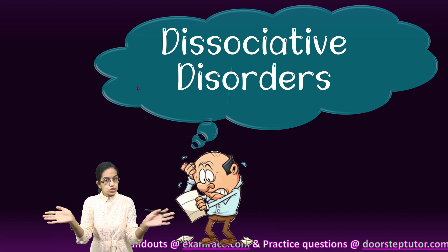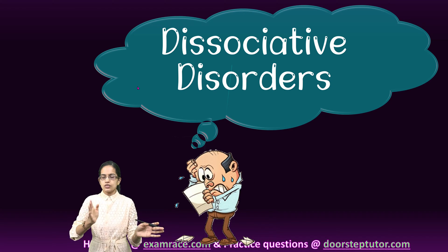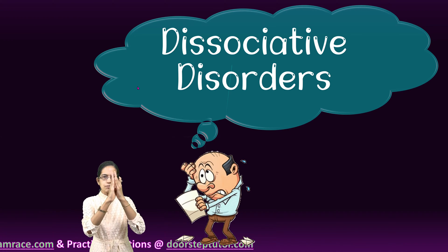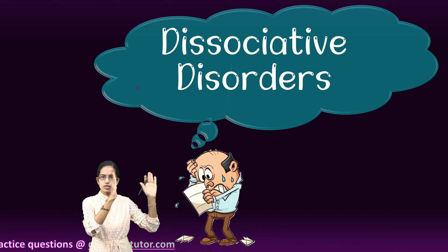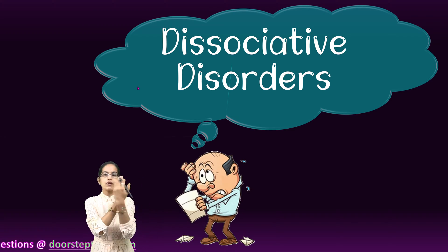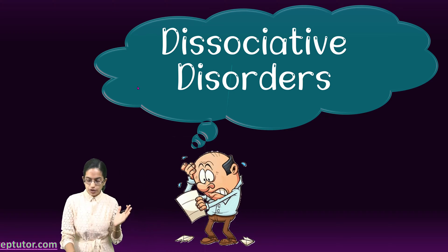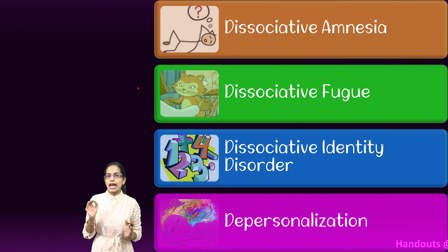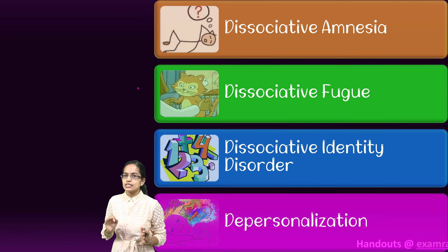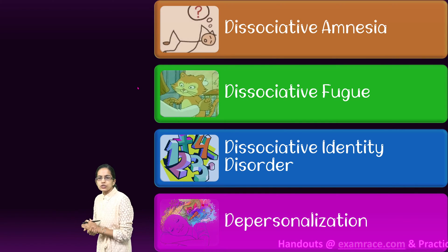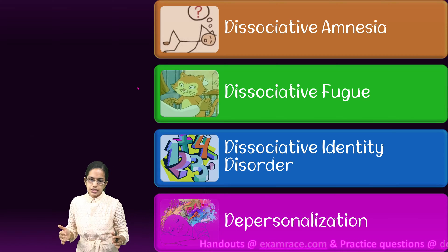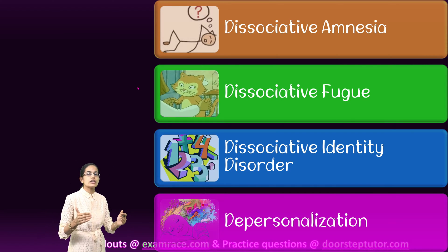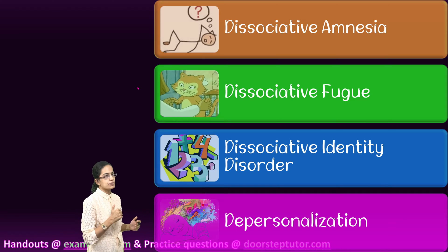The word 'dissociative' means to dissociate — the person has two different features and tries to keep one thing totally away from the other, and that is where dissociation occurs. Dissociative disorders can be categorized into four types: dissociative amnesia, dissociative fugue, dissociative identity disorder, and depersonalization.